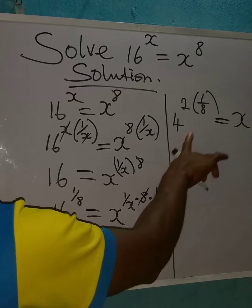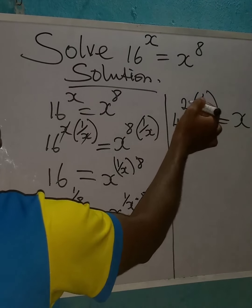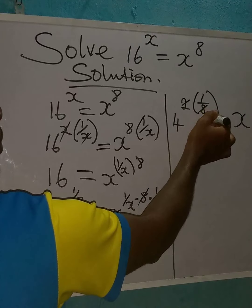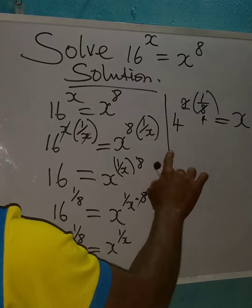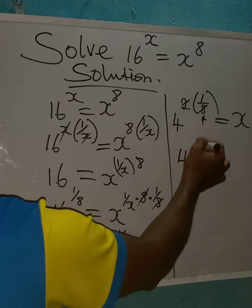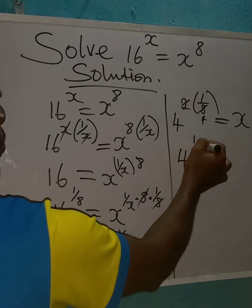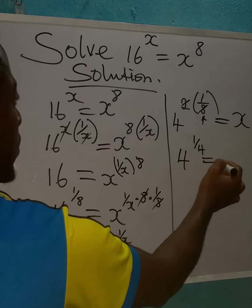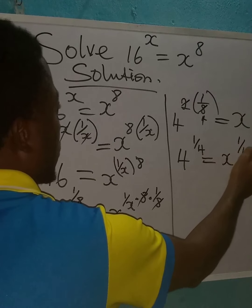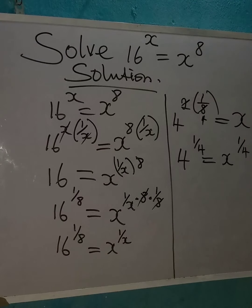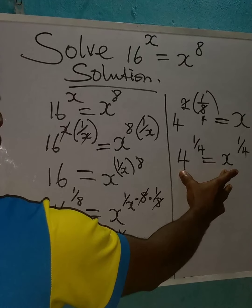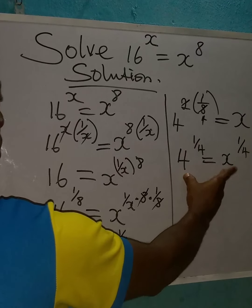From here, 2 can go into 8 four times, so the exponent simplifies: we have 4 to the power of 1 over 4. This is now equal to x to the power of 1 over 4.